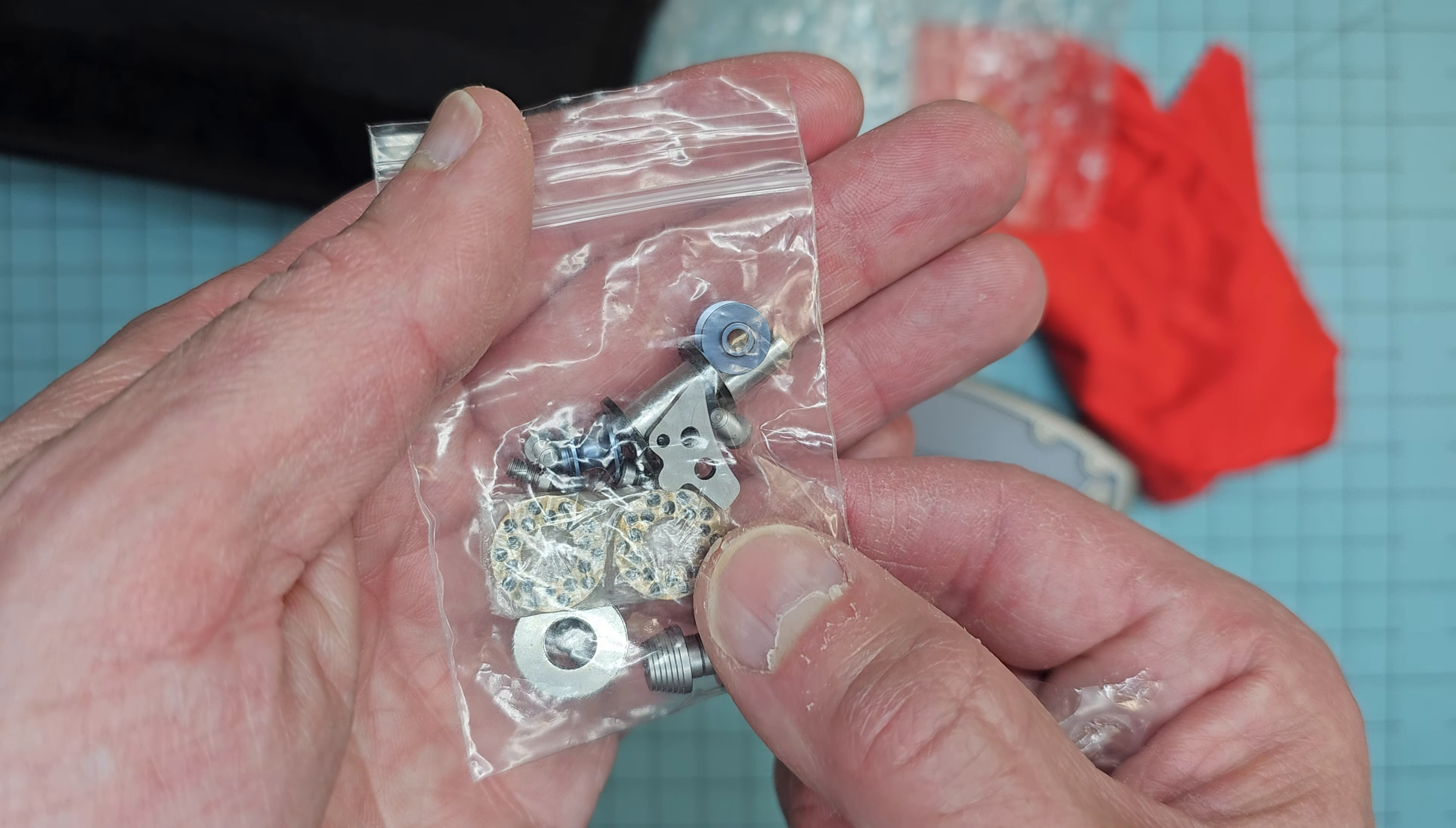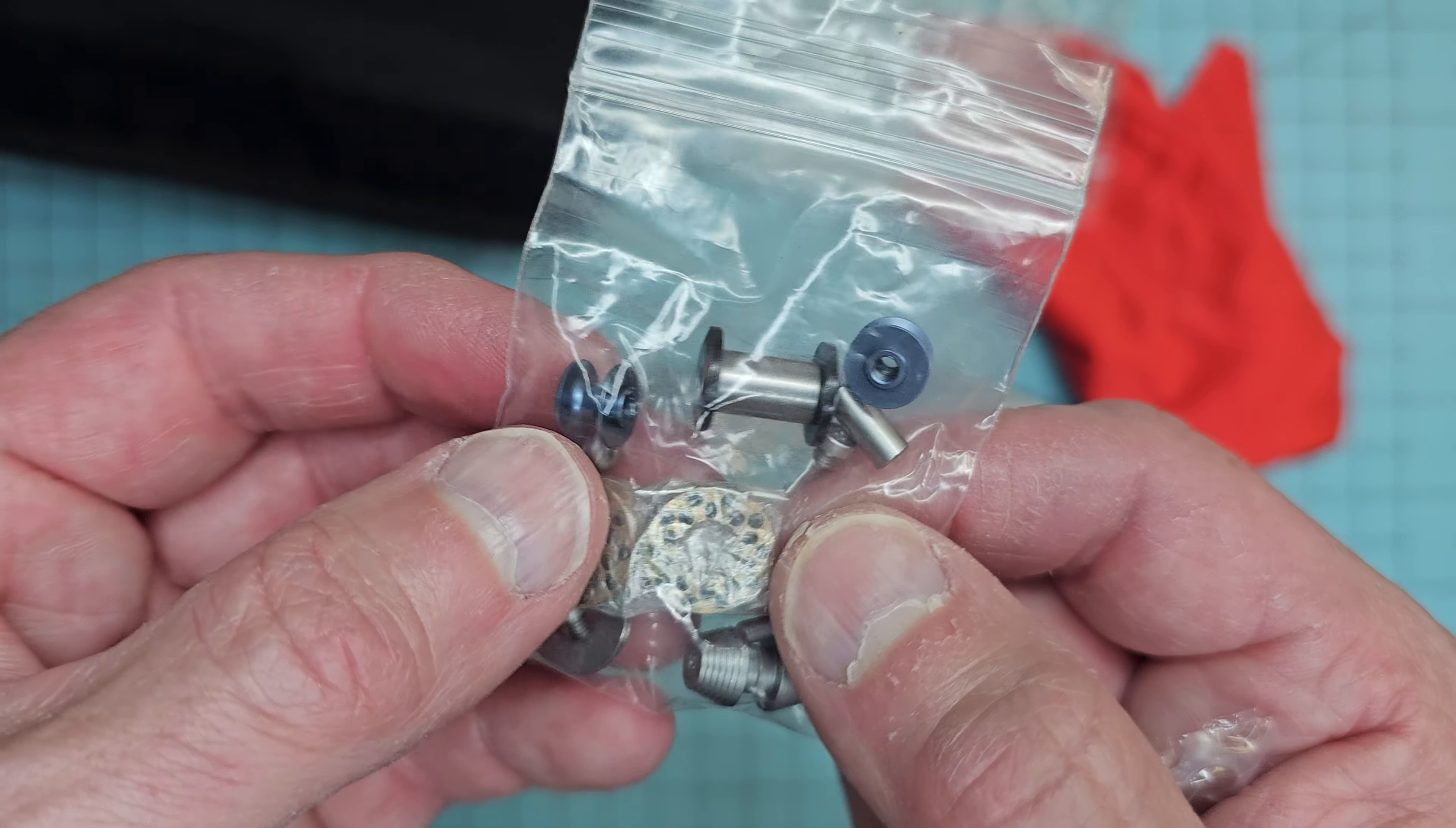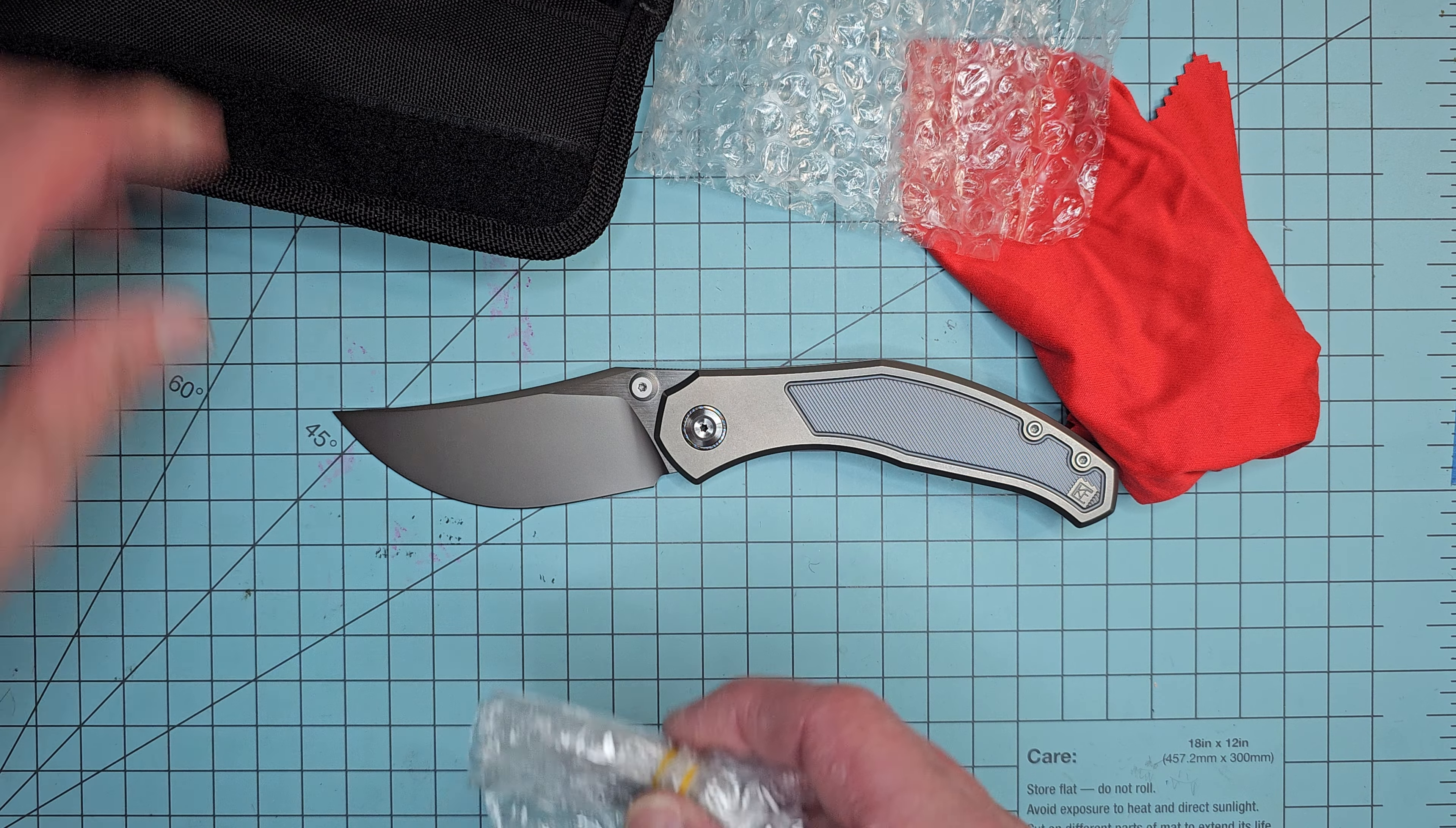So in here you've got your bearings, an extra set of bearings, a set of washers, thumb stud, backspacer, pivot, but no different collars. So that kind of makes me think that maybe the collars are fastened to the knife itself.